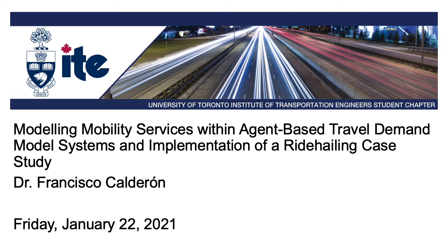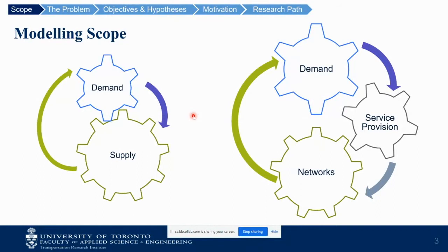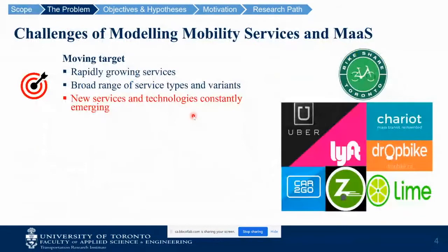We're talking about conventional travel demand model systems. It's the typical demand-supply interaction at a very high level. We're talking about agent-based, activity-based models at a large spatial scale — they are multi-modal, considering several modes, typically for medium to long-term planning, though short-term is also possible. We model a typical day of transportation. What we're proposing is to add a third dimension to our models, which is service provision. This is important because new mobility services are really dynamic and no longer simple.